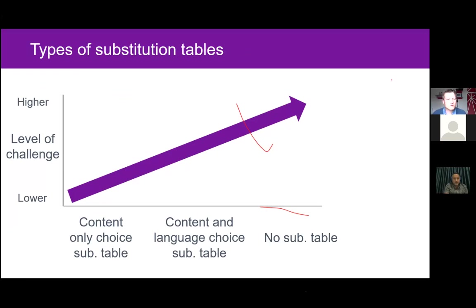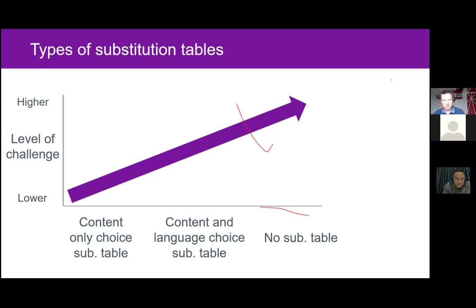To summarize, on the up-down axis of this chart we have the level of challenge. At the lowest end we have content-only choice substitution tables. If we want to make them more challenging, we can add content and language choices, and we can vary the complexity there. At the highest level of challenge, there is no substitution table at all — we just let students create the language themselves.